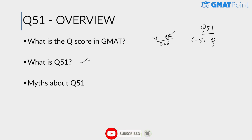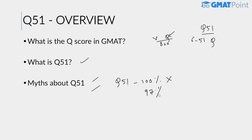Nevertheless, you should try to get all of them right to maximize your chances of getting a Q51. Only three percent of students who take the GMAT score a Q51, so even with a Q51 score you won't receive the 100th percentile — you will receive a 97th percentile. This percentile is only in the quantitative section, not the overall score or the verbal section.